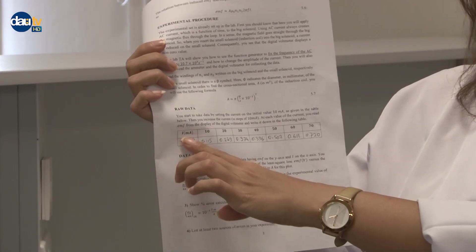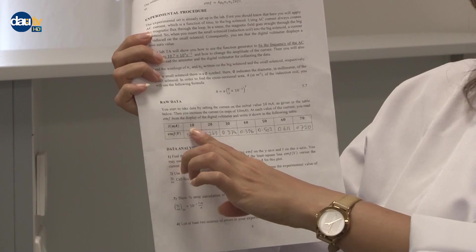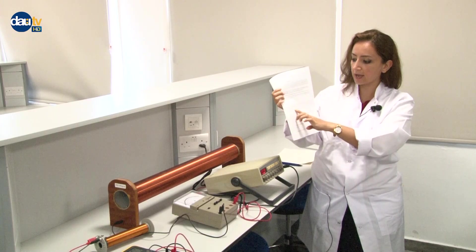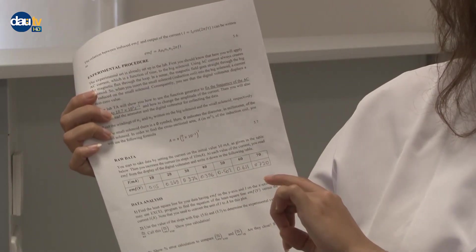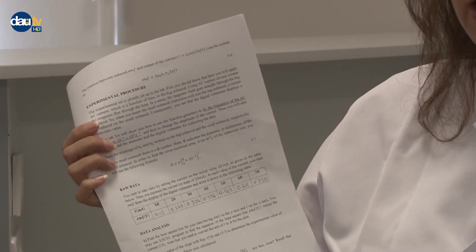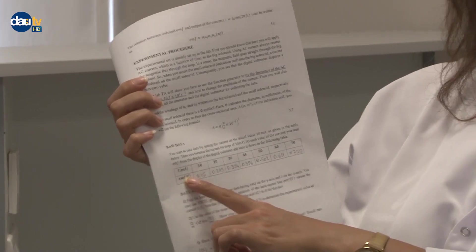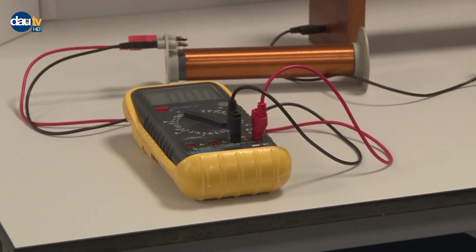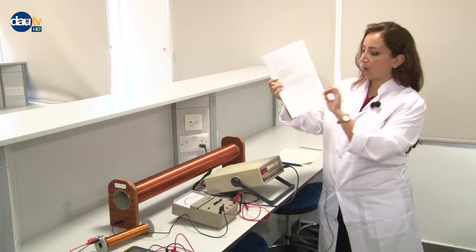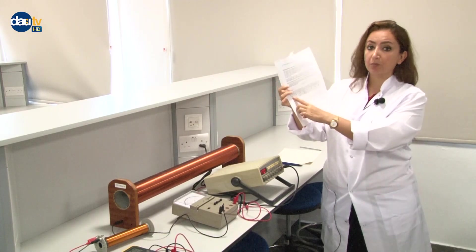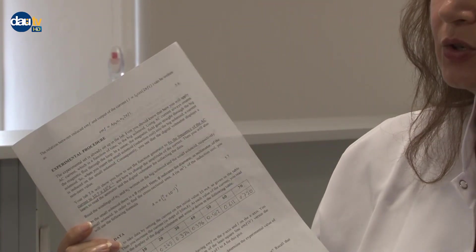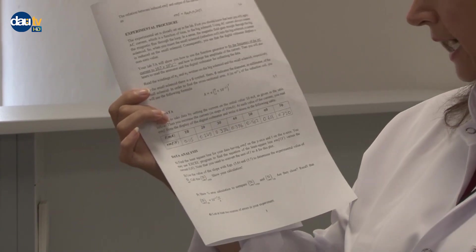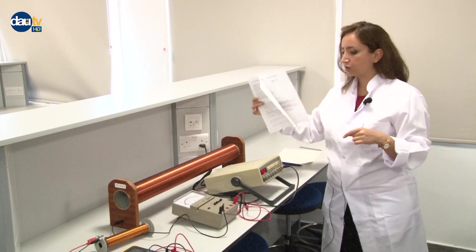Look at the table. We want to vary the current as the fixed values given in the manual: 10, 20, 30, 40, 50, 60 and 70. By varying the current, we want to measure and read our electromotive force from the voltmeter. Another point here is in milliampere, so we have to convert it to SI unit of current, which is ampere.